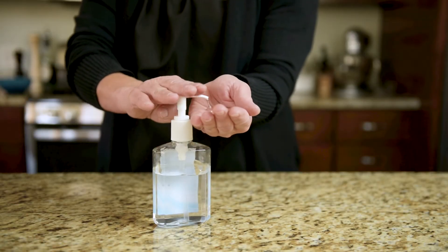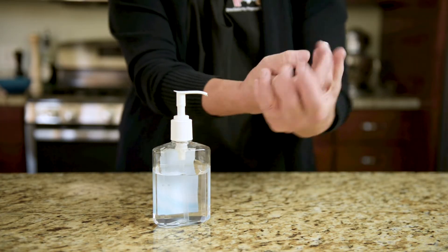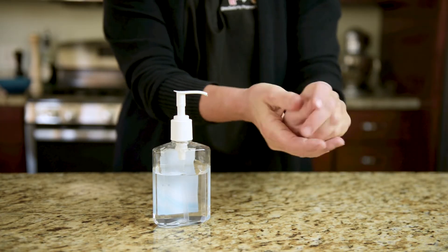To suction the trach tube, start by cleaning your hands with soap and water or alcohol-based hand gel. Clean your work surface with soap and water or a disinfecting wipe.